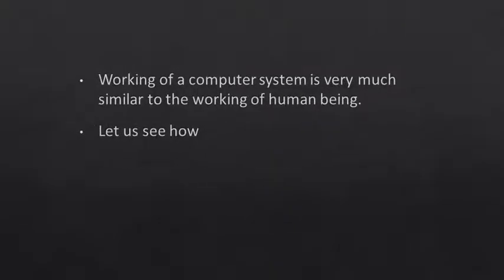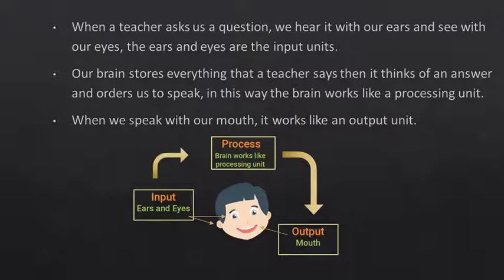Working of a Computer System is very much similar to the working of a human being. When a teacher asks us a question, we hear it with our ears and see with our eyes. The ears and eyes are the input units. Our brain stores everything that a teacher says, then it thinks of an answer and orders us to speak. In this way, the brain works like a processing unit.